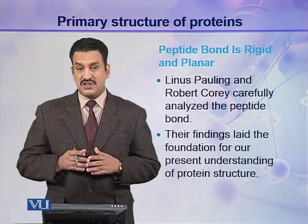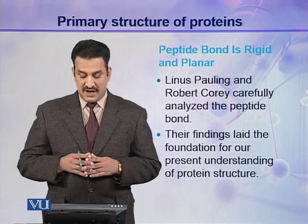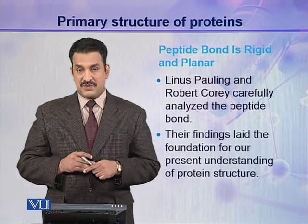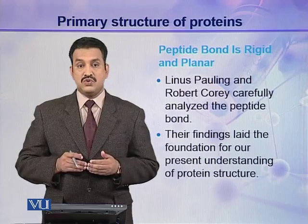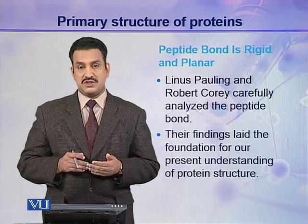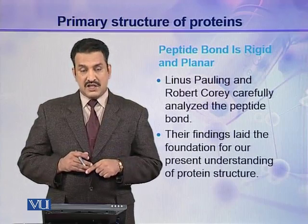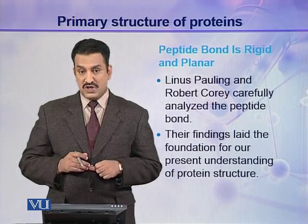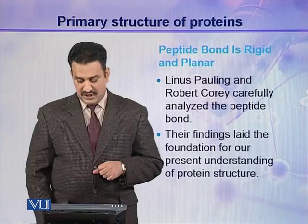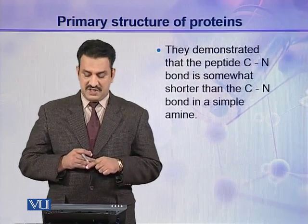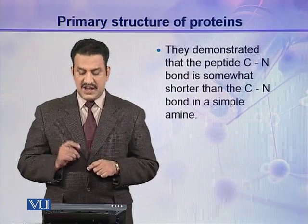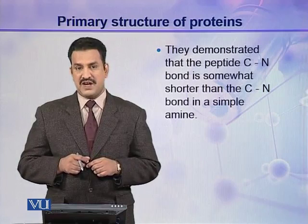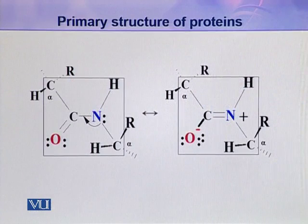The peptide bond is rigid and planar — this was stated by Pauling and Corey. Linus Pauling and Robert Corey carefully analyzed the peptide bond present in protein molecules. They also knew the importance of hydrogen bonding and other weak interactions present in biomolecules, and they made a number of important conclusions. Their findings laid the foundation of our present understanding of protein structure. They demonstrated that the peptide C-N bond is somewhat shorter than a normal C-N bond present in a simple amine.